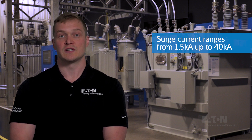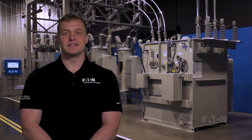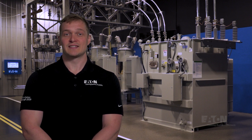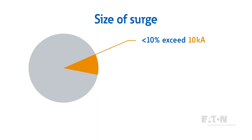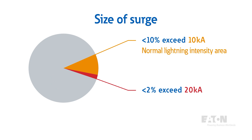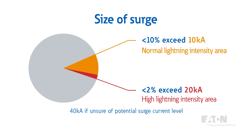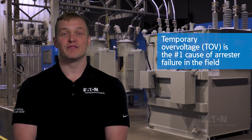The higher the surge current, the higher the discharge voltage, resulting in a lower margin of protection. Data collected over the years suggests that less than 90% of surges exceed 10 kA, and less than 2% exceed 20 kA. Using these two data points as a guide, most utilities select 10 kA surge current ratings for normal areas and 20 kA for high intensity areas. 40 kA may be used to ensure protection in case you are unsure of the potential surge current levels.